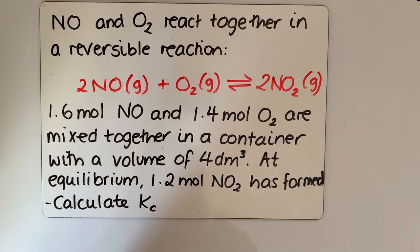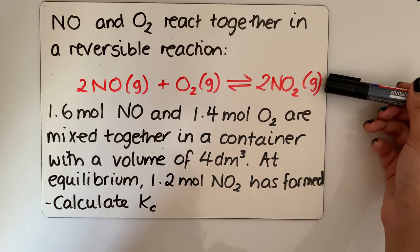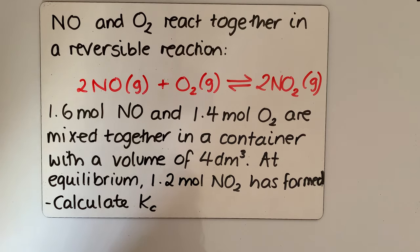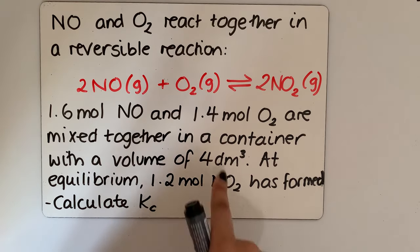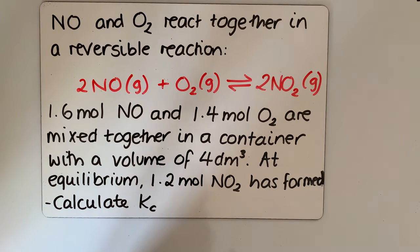We've got nitrogen monoxide and oxygen reacting together in a reversible reaction with the balanced equation here. We're then told that 1.6 moles of nitrogen monoxide and 1.4 moles of oxygen are mixed together in a container with a volume of four decimetres cubed. So we're not given the equilibrium concentrations — we are given the initial moles of everything and the volume of the container. At equilibrium, we have 1.2 moles of nitrogen dioxide being formed, so we're given the equilibrium moles of the product.